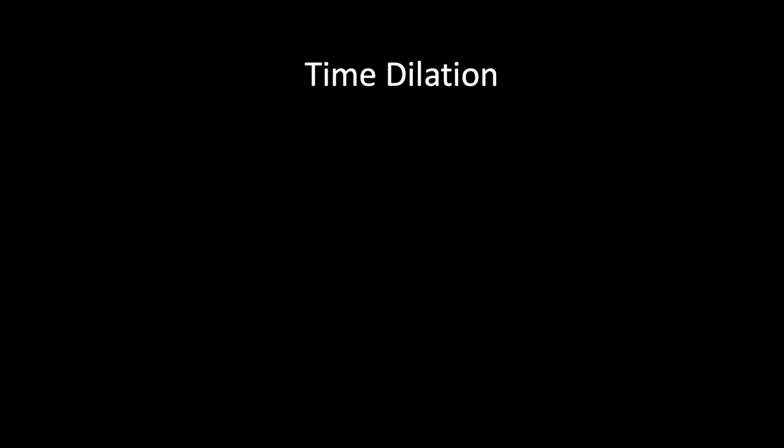We can calculate the time for the tick-tock of the stationary clock, called t₀, by noting that light travelling at speed c covers 2 metres during one tick-tock, so t₀ equals 2/c. For the moving clock, an observer on the platform sees the light take a zig-zag path between the mirrors. Due to the motion of the train, the path taken by the light is longer than for the stationary clock. If the train moves at velocity v, the train travels a distance vT during the time T for a tick, while the light travels a distance cT.